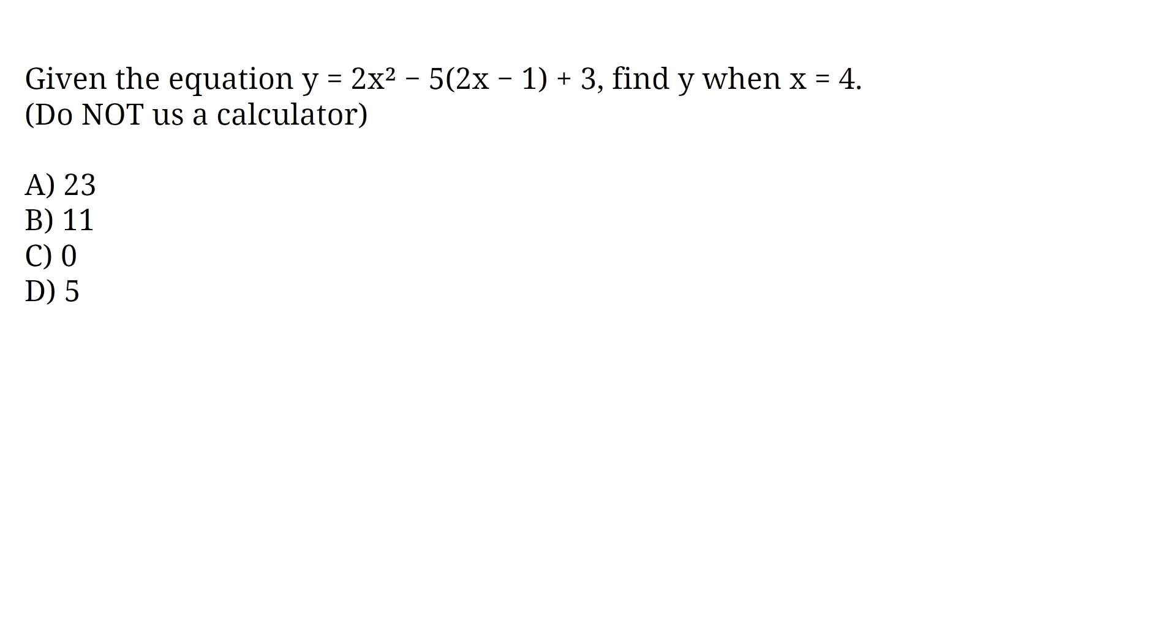Given the equation y equals 2x squared minus 5 times 2x minus 1 plus 3, find y when x equals 4. Options: a. 23, b. 11, c. 0, d. 5.